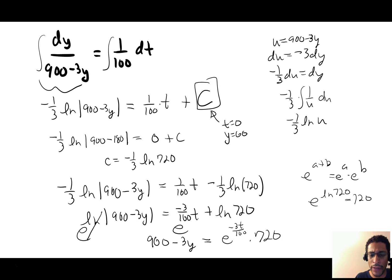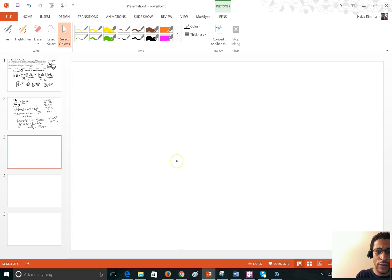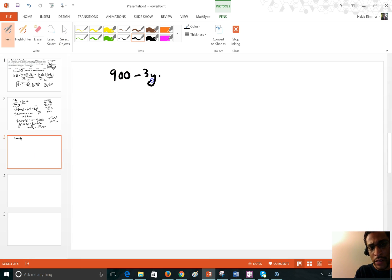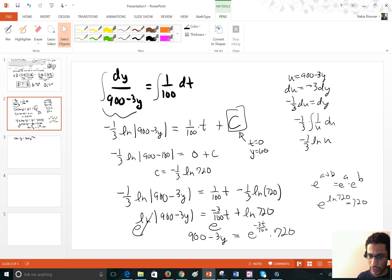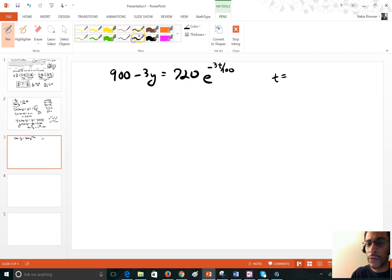We can solve for Y or leave it in this form. Our job is to evaluate it at a specific time. The question asks: when t = 100 log 2, find Y. So we have 900 − 3Y = 720 · e^(−3t/100), and we plug in t = 100 log 2.